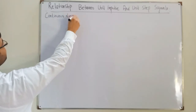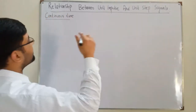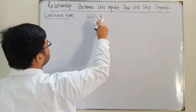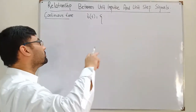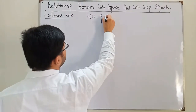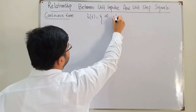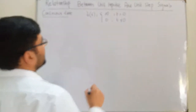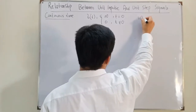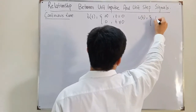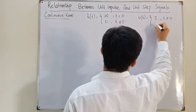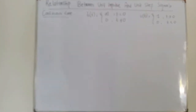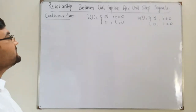First, writing down the definition: delta of t is infinity (undefined) at t equals 0, and it is 0 at t not equal to 0. Similarly, the unit step function is 1 for t greater than or equal to 0, and 0 for t less than 0.